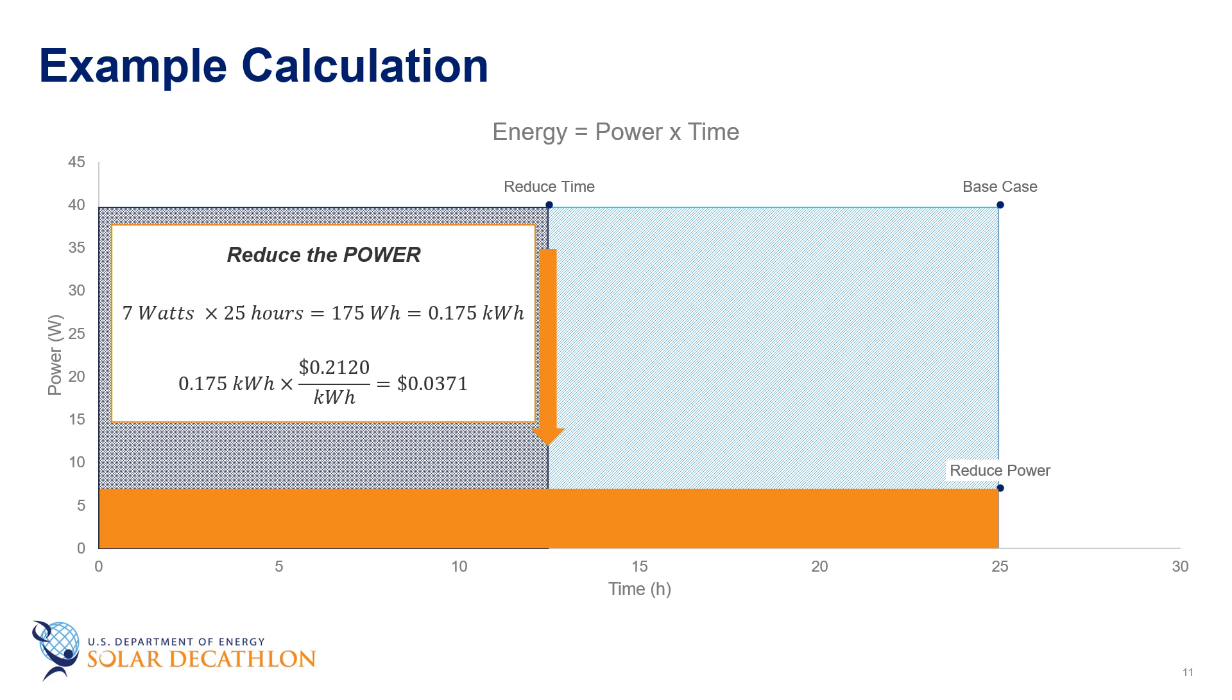Alternatively, another way to save energy is to reduce the power. So we can take that 40 watt incandescent light bulb and we can replace it with a seven watt LED equivalent. Both will give out approximately the same amount of light. But now instead of 40 watts, we have a power rating of seven watts. Multiply this times the bulb's runtime of 25 hours equals 175 watt hours or 0.175 kilowatt hours. Multiplying that by the utility rate, again, in this case we're using Rhode Island, we'll see that the cost of running this light bulb has dropped to 3.7 cents, which is a substantial reduction from where we were in the base case.